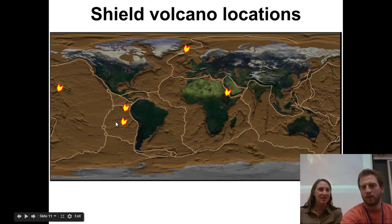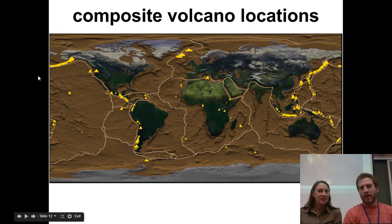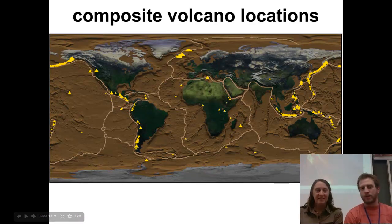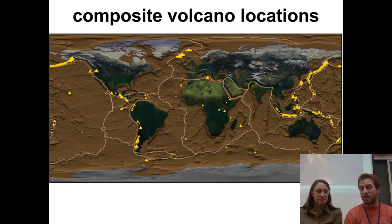Compare that to all these composite volcanoes on the next slide — there are a lot of them, and these are mostly on those convergent boundaries. We've got a lot higher silica content and more gases present, so we typically get more of these explosive volcanoes.